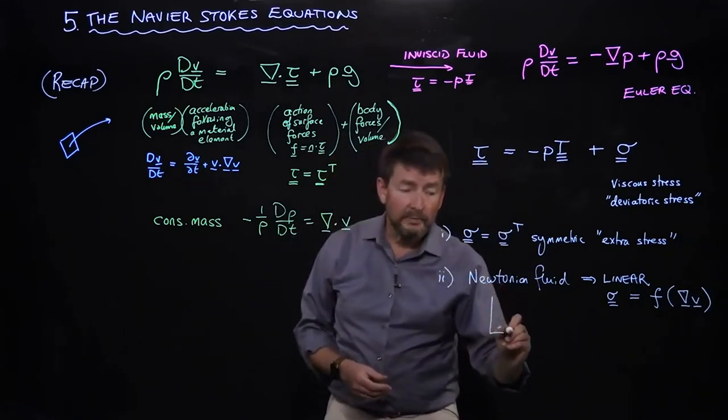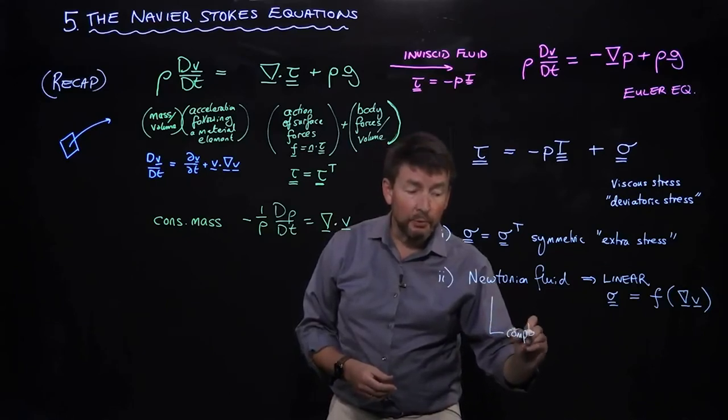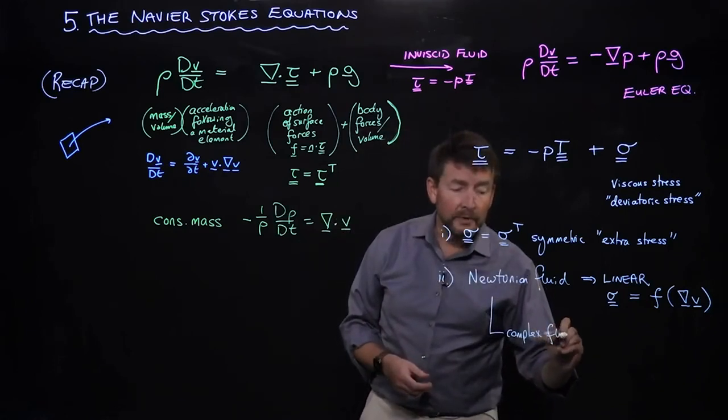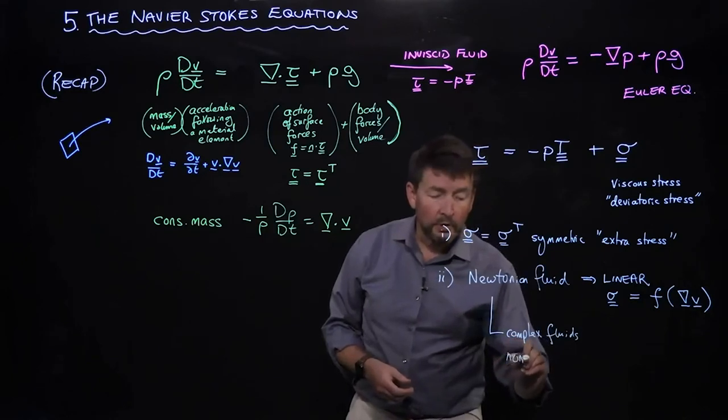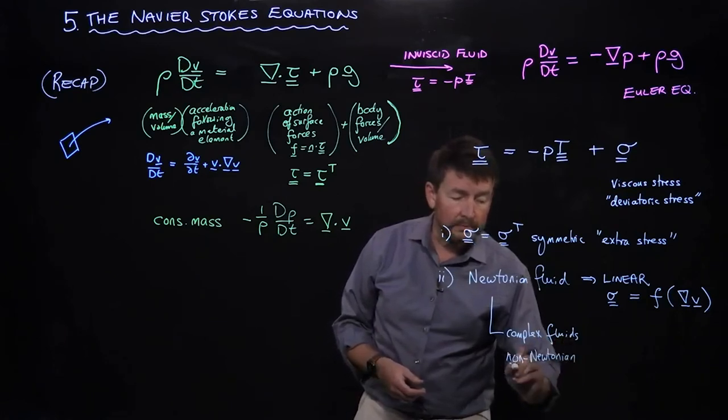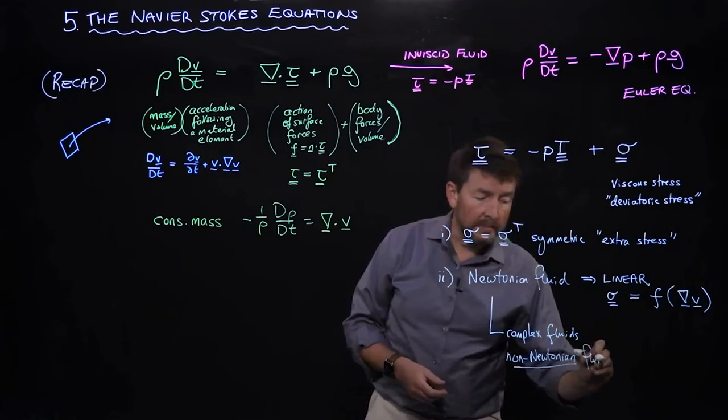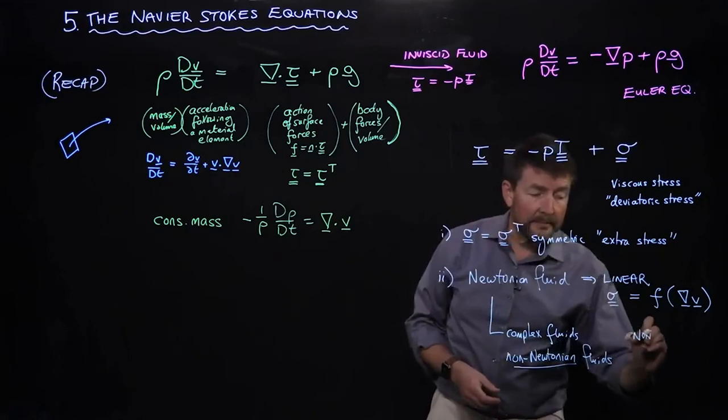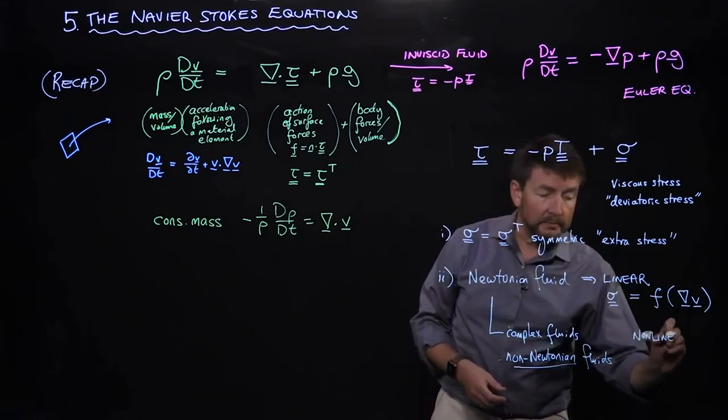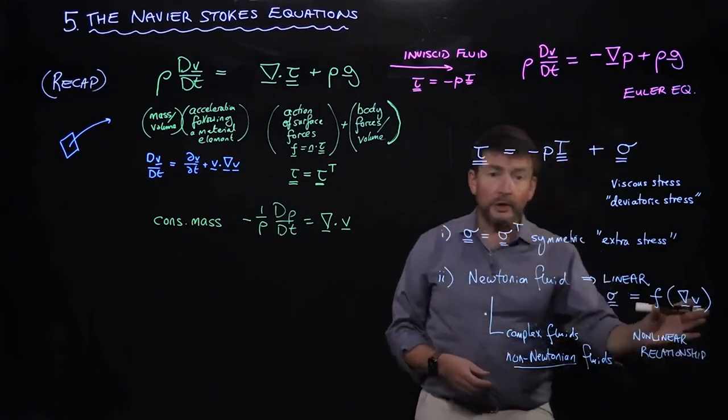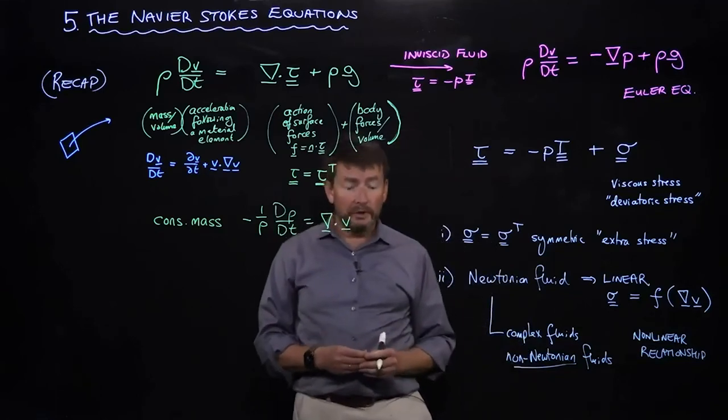If you're interested in more complicated materials, many materials, for example toothpastes or foods such as mayonnaise or ketchup, are complex fluids, or sometimes they'll be called non-Newtonian fluids. As you might imagine, the key thing about those is typically that they'll have a nonlinear relationship. This function might be nonlinear for those kinds of materials.